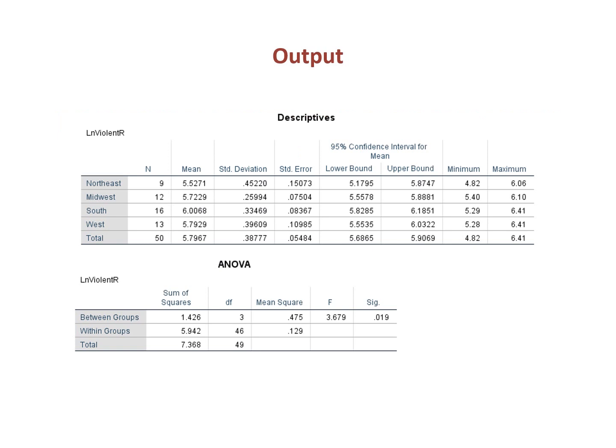I will start with the example from the one-way ANOVA video. In that video, we established that the log of the violent crime rate varies by region of the country.